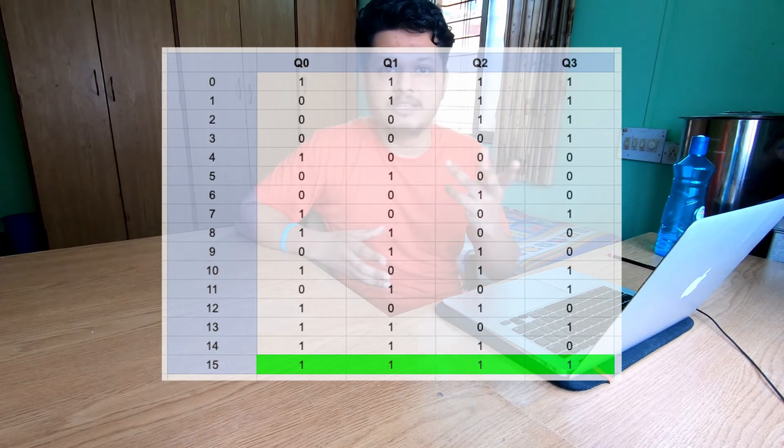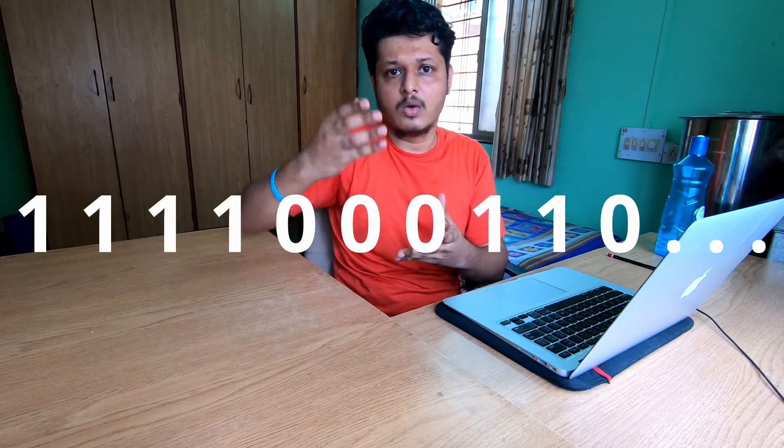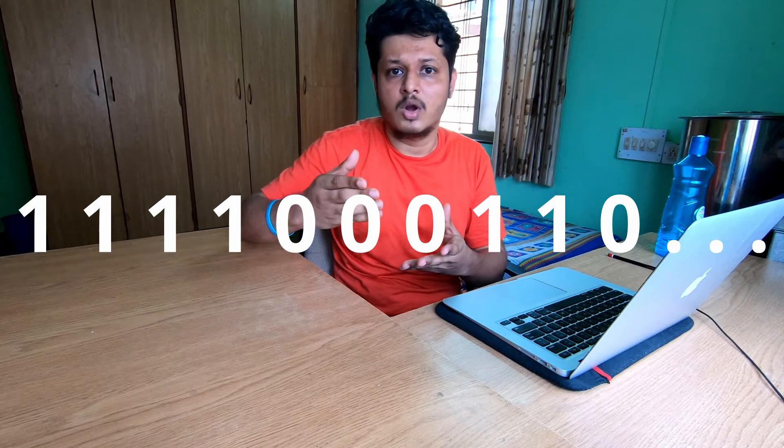Our PRBS data can be anything from q0, q1, q2 or q3. But in my circuit I use q3 as my PRBS sequence. So we get the PRBS sequence like 1 1 1 1 0 0 0 1 1 0, and it continues and repeats after 15 cycles.